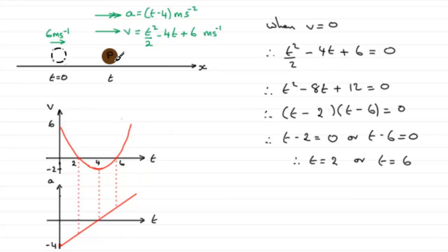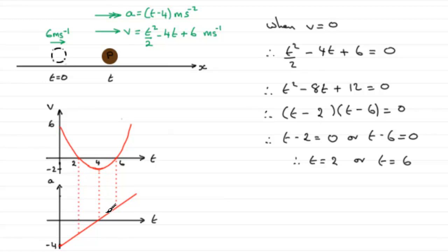So what is actually happening with this particle? Looking at these graphs, it starts off at 6 metres per second moving to the right. There's a negative acceleration slowing it down, and after 2 seconds it stops. The acceleration at 2 seconds is still negative, so it heads back in the other direction. At 4 seconds it's moving at a speed of 2 metres per second to the left, and the acceleration is 0. But after 4 seconds the acceleration becomes positive — so although it's moving to the left, the acceleration is now directed towards the right, starting to slow it down.